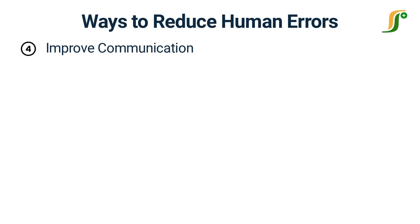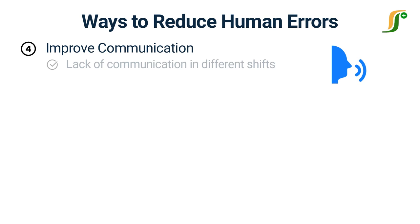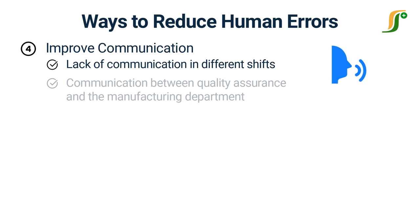Improve communication. Communication plays an important role in the reduction of human errors. Lack of communication in different shifts causes a lot of problems. Sometimes the personnel in the night shift do not communicate the process findings to the morning shift in charge, which causes the problem. Communication between quality assurance and the manufacturing department should be proper at every stage.